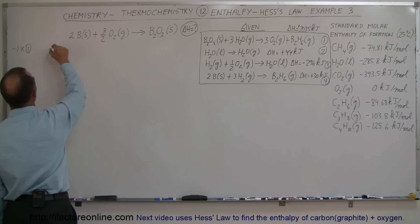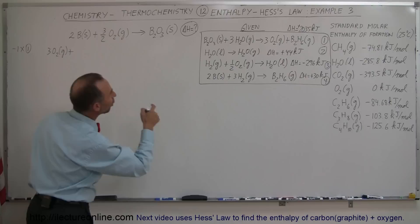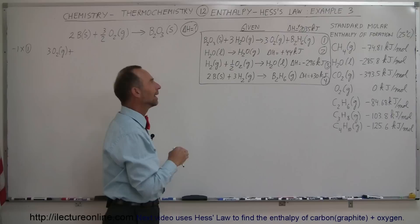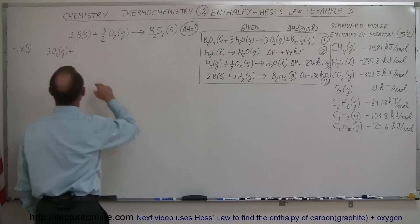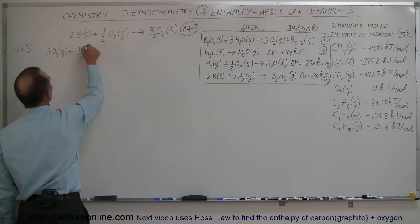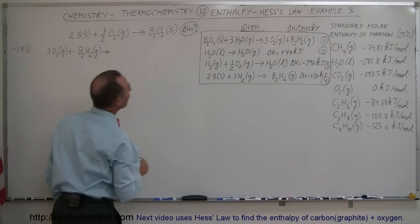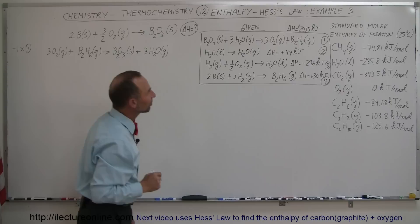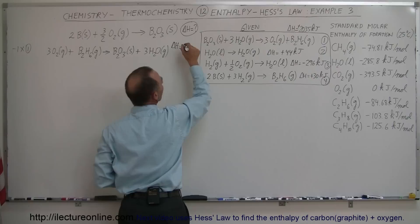When I do that, the equation becomes: three moles of oxygen gas plus one mole of diborane — also called boron hexahydride, B₂H₆, which is a gas — reacts to form boron trioxide, which is a solid, plus three moles of water in the gas state. And since we turned the equation around, the delta H now becomes minus 2,035 kilojoules.